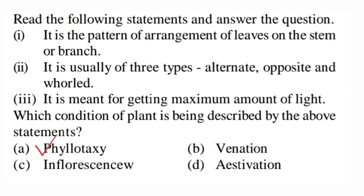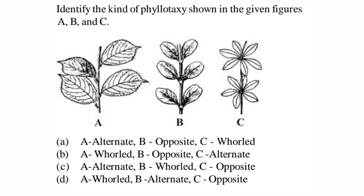Next question: identify the kind of phyllotaxy shown in figures A, B, and C. Phyllotaxy is the pattern of arrangement of leaves on the stem. Figure A shows alternate phyllotaxy — from each node a single leaf arises, as in China rose (Hibiscus), Brassica (mustard), or Helianthus (sunflower). Figure B shows opposite phyllotaxy — a pair of opposite leaves arise from the stem, seen in Calotropis and guava. Figure C shows whorled phyllotaxy — more than two leaves arise from each node, seen in Alstonia. So option A is correct.